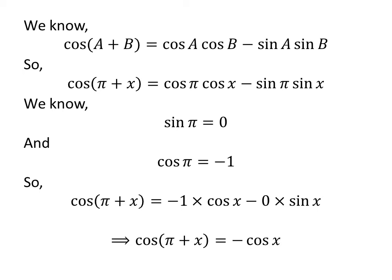As minus 1 times cosine of x is equal to minus cosine of x, and 0 times sine of x is equal to zero.